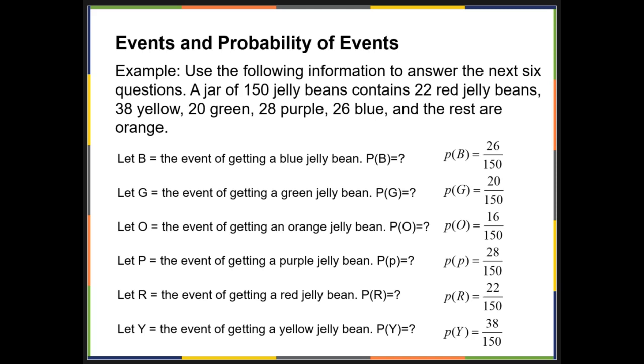You do the same thing for each of those. Probability of getting a green? Well, there's 20 green, so the probability of getting green is 20 over 150. You do the same for each of those.